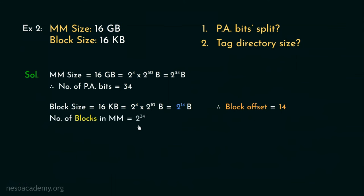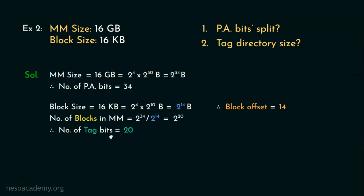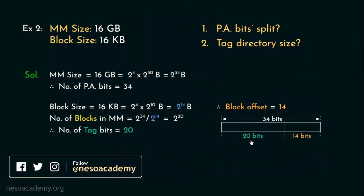The number of main memory blocks is 2 to the power 34 divided by 2 to the power 14, which is 2 to the power 20. Since we are dealing with fully associative memory mapping, the number of tag bits is 20 bits — the entire block number bits are used as tags. So the physical address bit split is: 14 least significant bits for block offset and 20 bits for the tags. This is the answer to the first question.